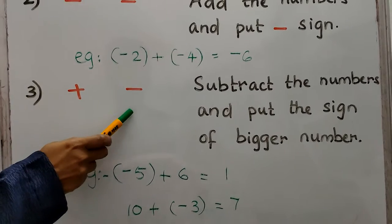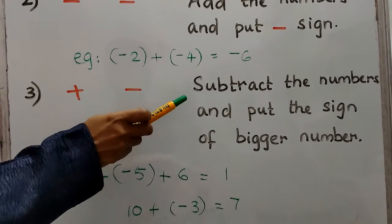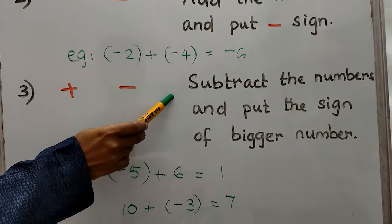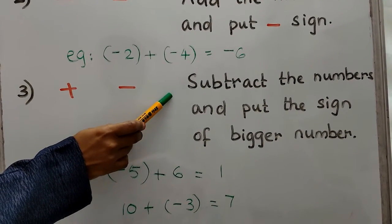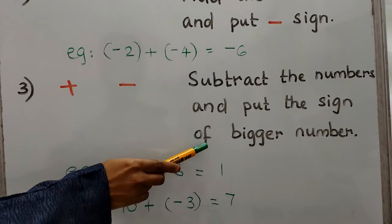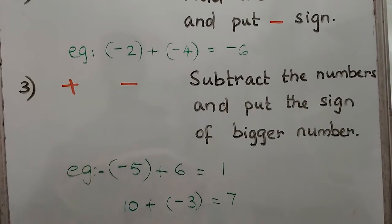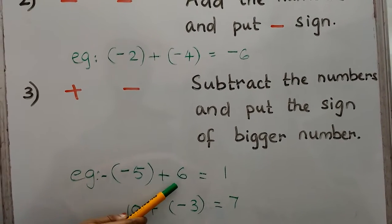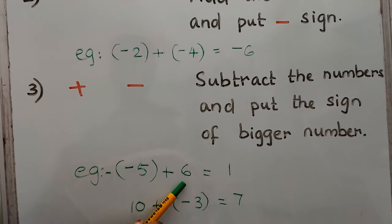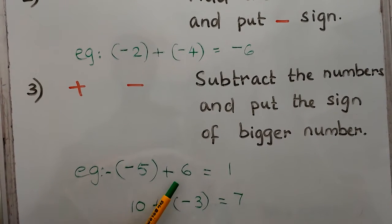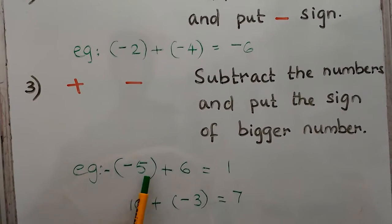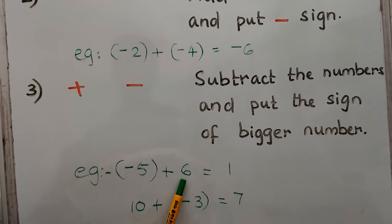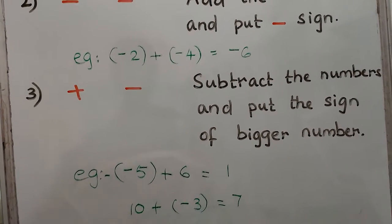If one is positive and another is negative, then subtract the numbers and put the sign of the bigger number. While subtracting, we are taking the numbers only, and while selecting the bigger number also, we are taking the numbers without sign. For example, negative 5 plus 6 — we take the numbers and subtract: 6 minus 5 is 1, and the bigger number is 6 without sign. And 6 is positive, so answer is positive.